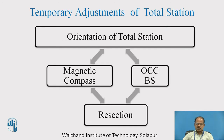That temporary adjustment of the total station includes another important step: orientation. Orientation of the total station may be done by magnetic compass or by OCC-BS setup. However, both of these methods are not that applicable particularly when you are going to use a stakeout operation.